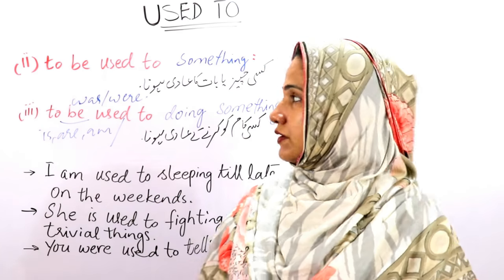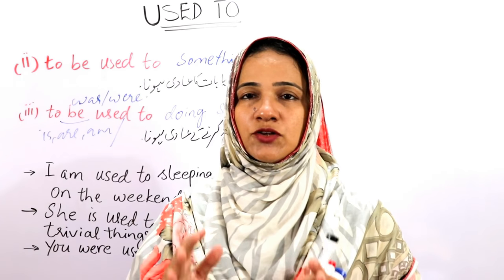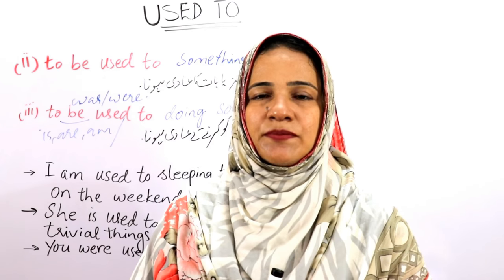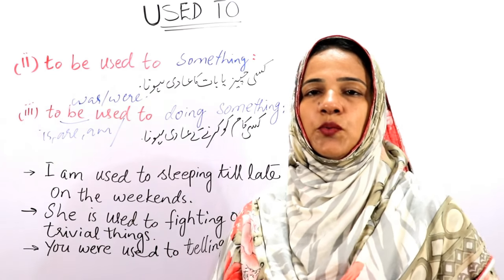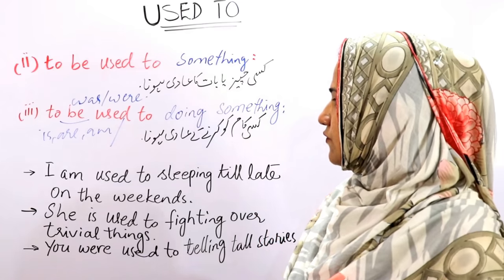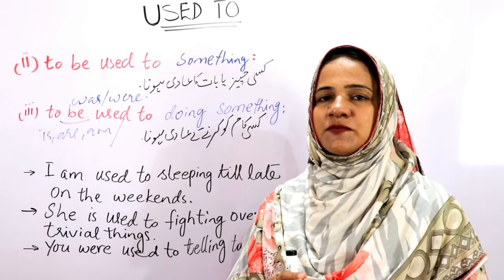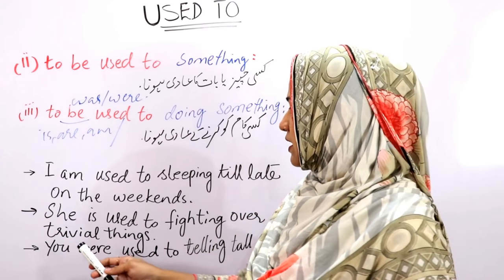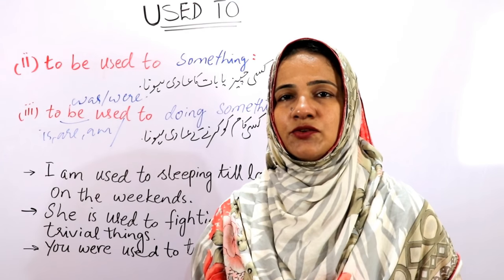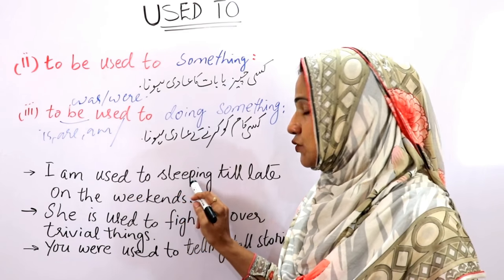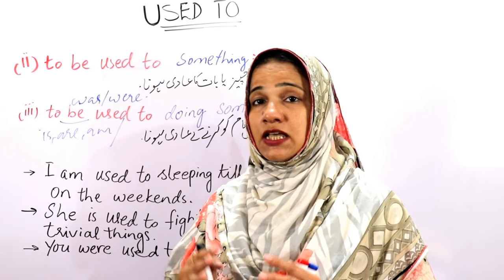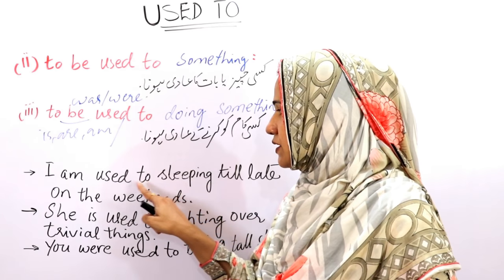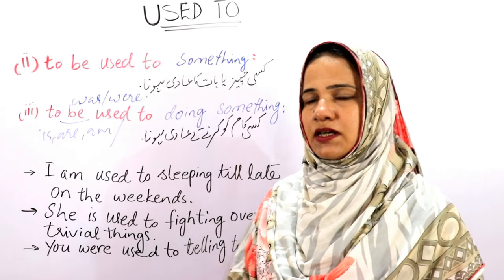We have discussed the expression 'to be used to something,' meaning to be accustomed to something. Now we are going to discuss 'to be used to doing something,' meaning to be accustomed to doing something. For example: 'I am used to sleeping till late on weekends.' 'She is used to fighting over trivial things.' 'You were used to telling tall stories.' With 'used to,' we use the verb with '-ing,' which is called a gerund. This 'to' is a fixed part of the expression and has nothing to do with the infinitive, so we must use a gerund here.